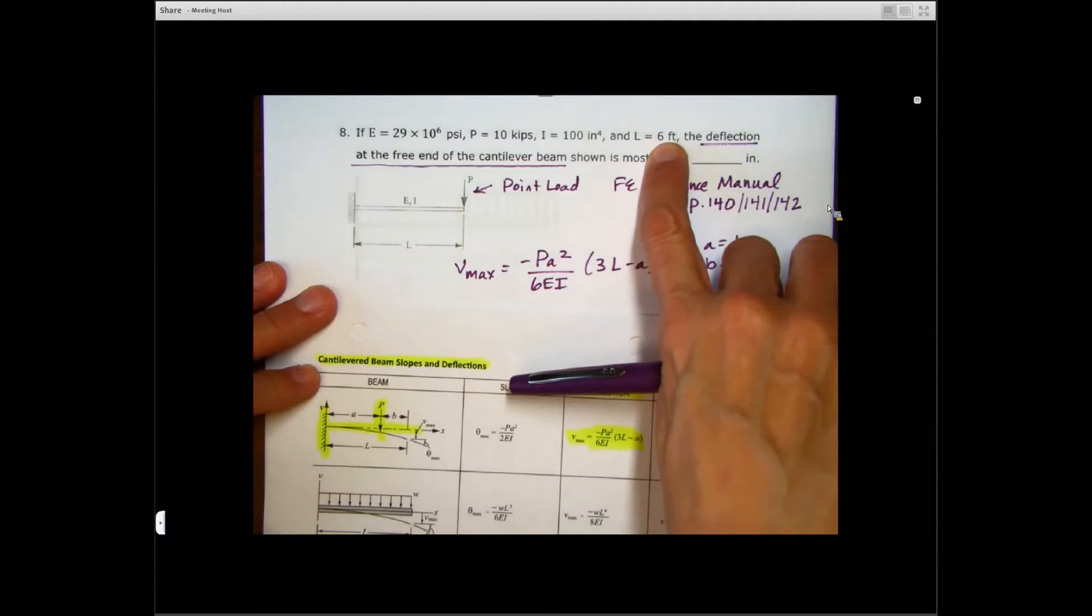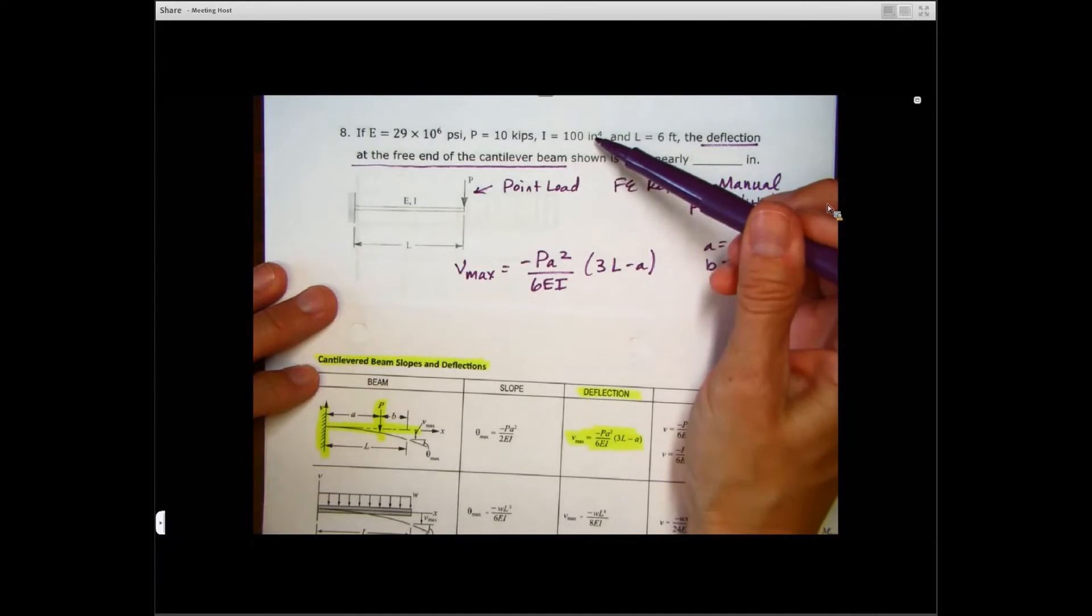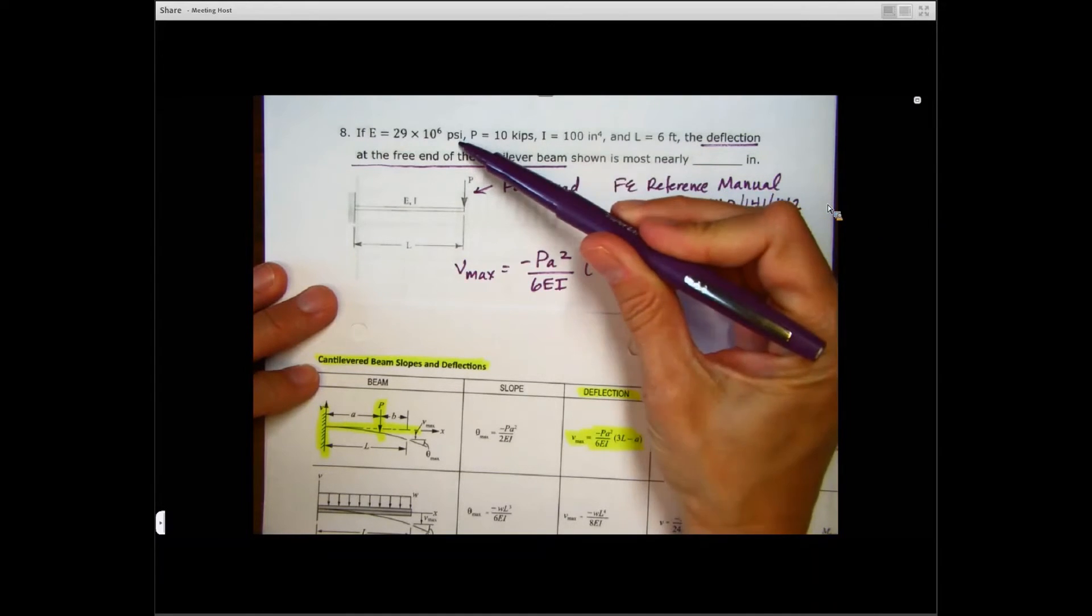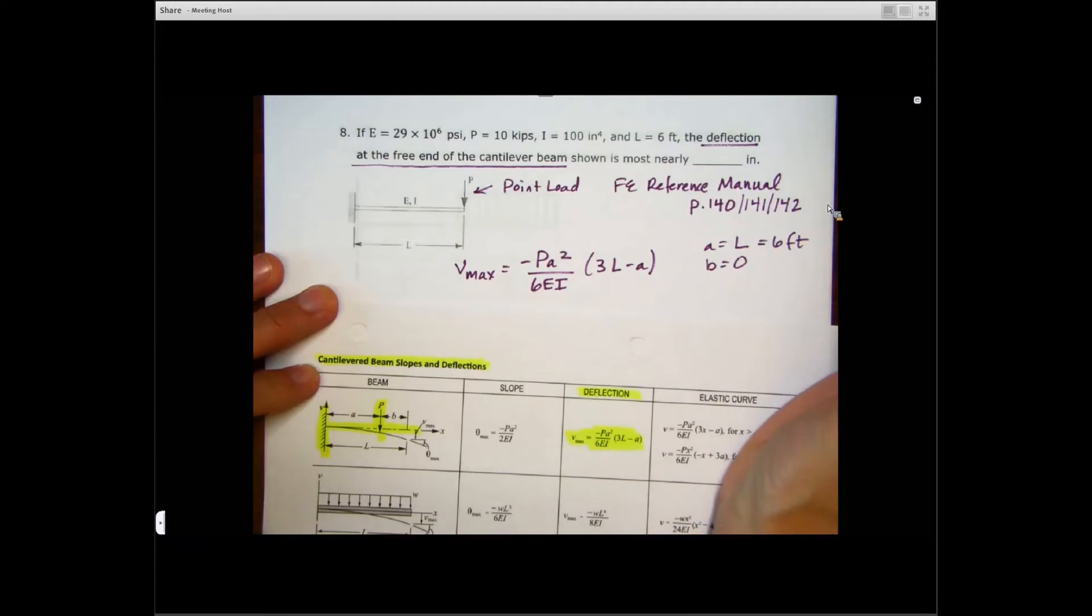We are told here that L is equal to 6 feet. But when we're going to plug this in, when we use this formula, we can see inches here. We see inches here. So let's go ahead and change that feet to inches right away. So I'm just going to make that 72 inches right off the bat there.